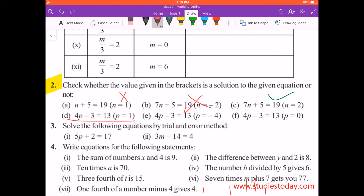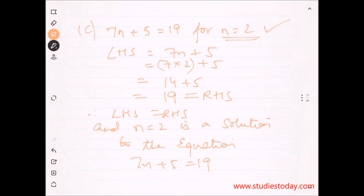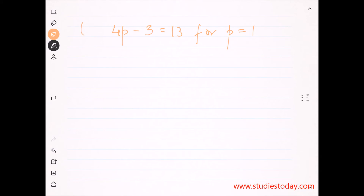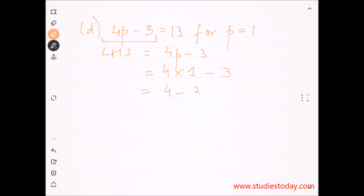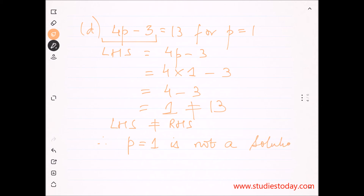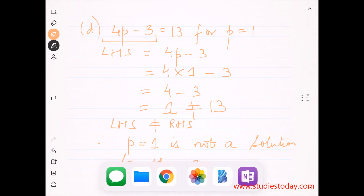For the first time we got a correct solution. Next: 4P minus 3 equals to 13, for P equals to 1 — that's part (d). LHS kya hai aapka? Sirf left hand side: 4P minus 3. P ki value 1 daalni hai. BODMAS lagaen: 4 into 1 is 4, then 4 minus 3 equals 1, which is not equal to 13. So LHS is not equal to RHS. Therefore P equal to 1 is not a solution.